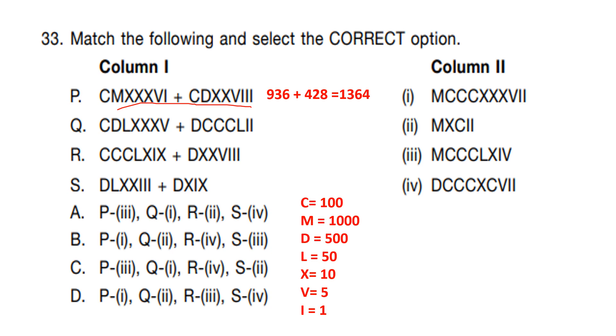Q is connected to I. And in option A and C, Q is connected to I. P is connected to 3. In both, it is given. R is connected to 4. And this is in option C. So answer is option C.